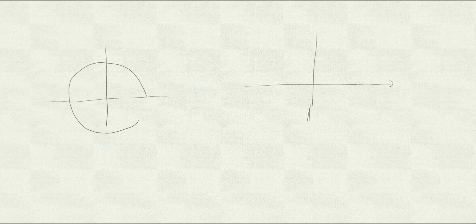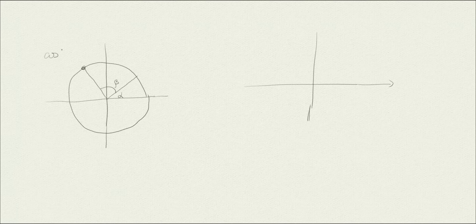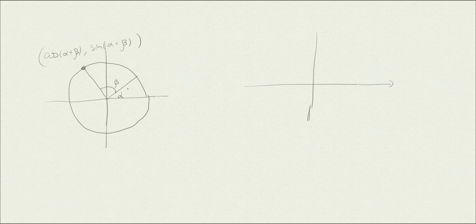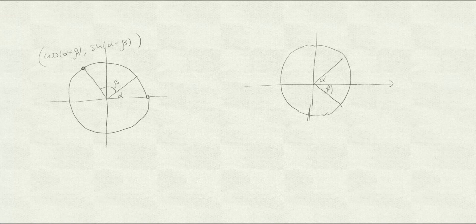Suppose I want to derive the formula for the cosine or sine of the sum of two angles. Take the unit circle. If we have angle alpha and add another angle beta, the coordinates of that point are, by definition, cosine of alpha plus beta and sine of alpha plus beta. For now, assume that alpha and beta are sharp angles — there is a way to extend those identities.